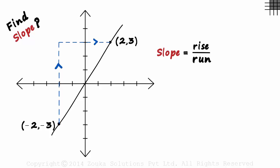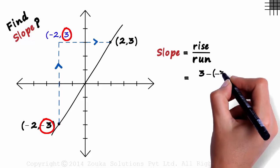As it meets the x axis at minus 2 and the y axis at 3, its coordinates will be minus 2 comma 3. The rise will be the difference in the y coordinates. 3 minus minus 3.